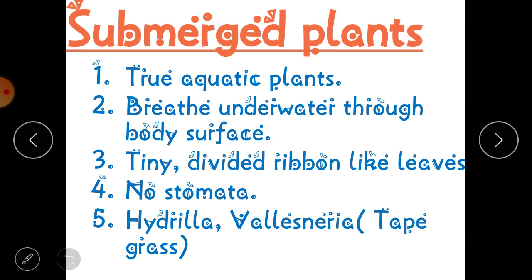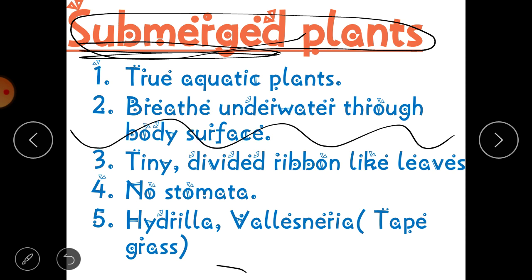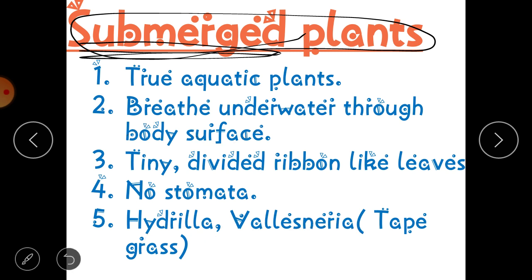The last category of aquatic plants is submerged plants. Submerged means underwater. These plants are completely submerged in the water — they are found entirely below the water surface. That is why they are known as true aquatic plants, because they are totally inside the water.